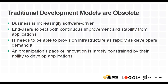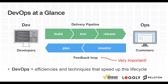An organization's pace of innovation is largely constrained by its ability to develop applications. Looking at what DevOps looks like at a glance, we examine the delivery pipeline and feedback loop. Most people think DevOps and automation means having a CI/CD pipeline in place, but there's more to DevOps practices than that.